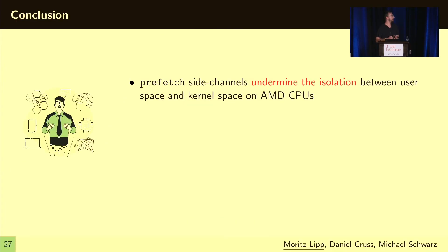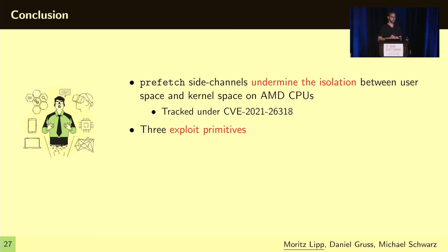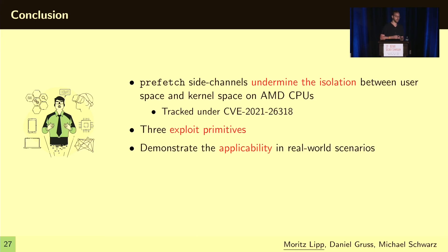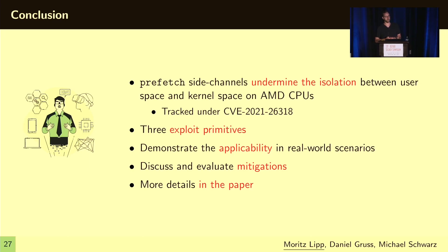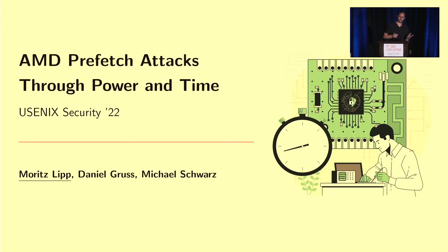To conclude, prefetch side channels undermine the isolation between user space and kernel space also on AMD CPUs, and this issue has been tracked under a CVE number. We presented three exploit primitives, a new timer usable on Zen 2 and Zen 3, and demonstrated applicability in real-world scenarios. We discussed and evaluated mitigations, but we invite you to read the paper for more details and experiments. Thank you for your attention — feel free to ask questions or talk to us afterwards.